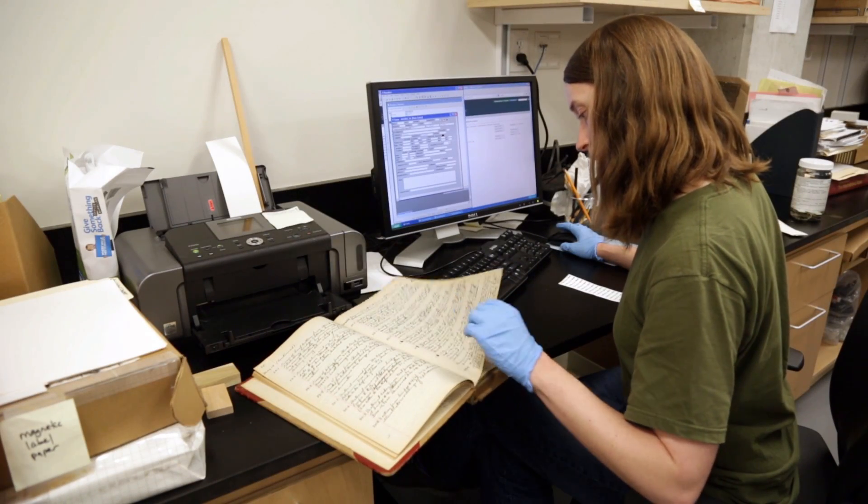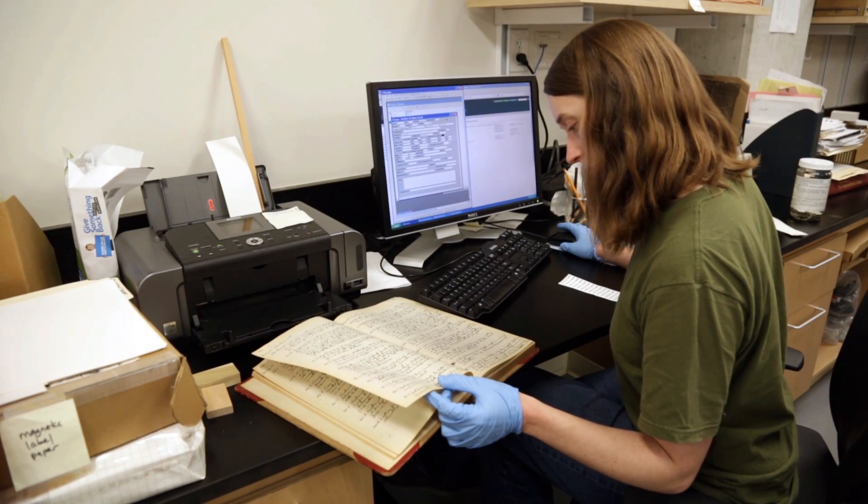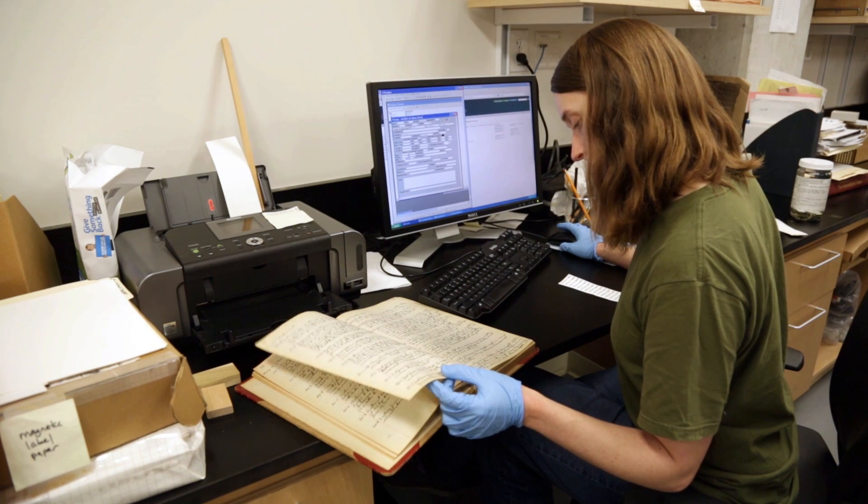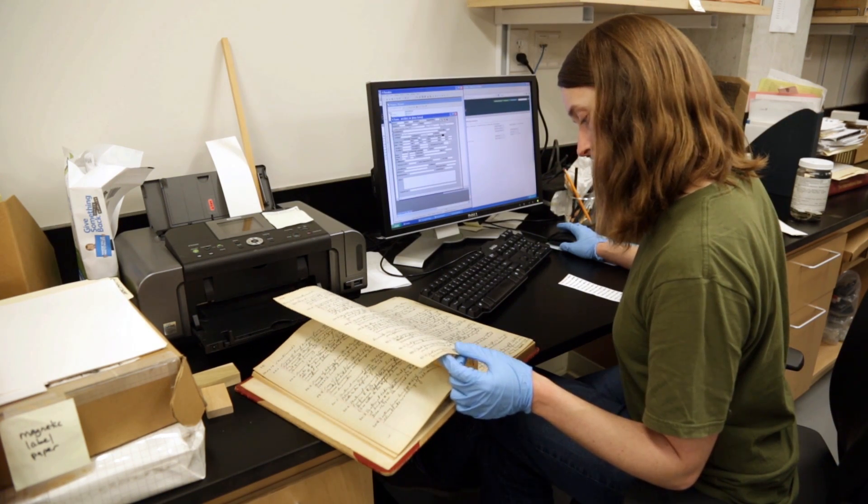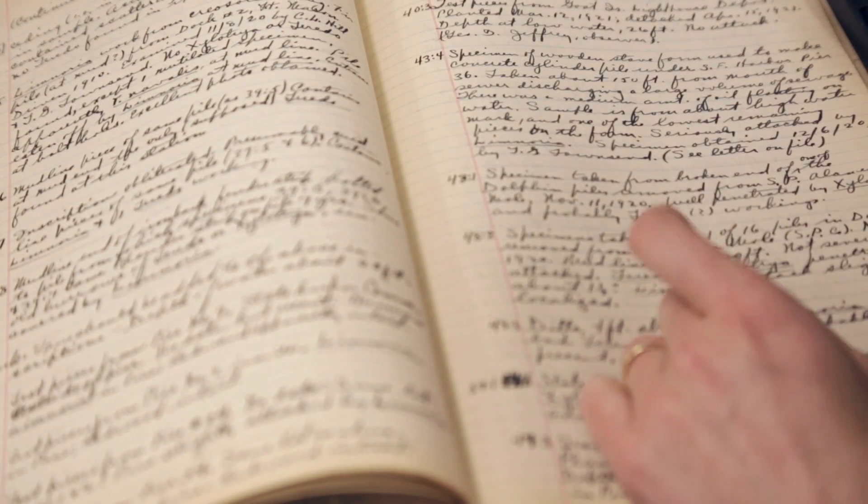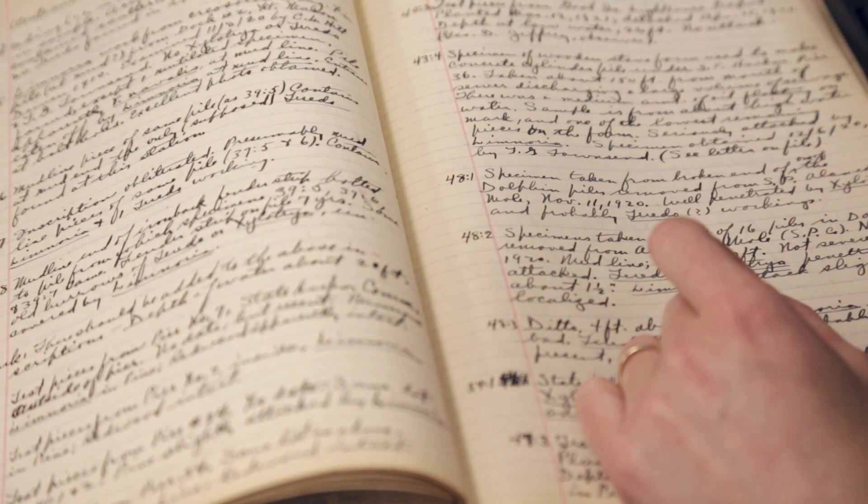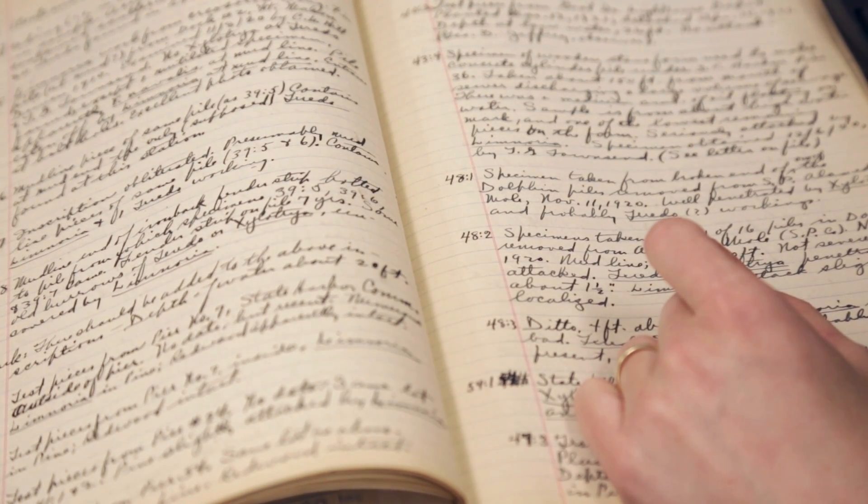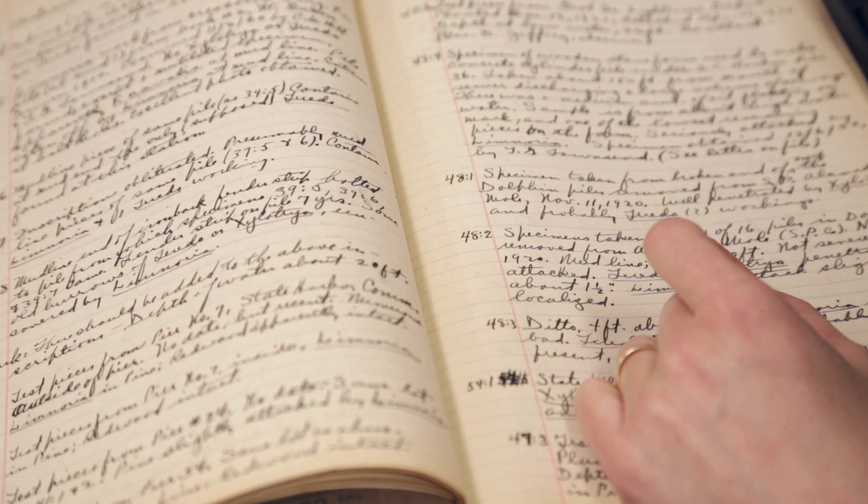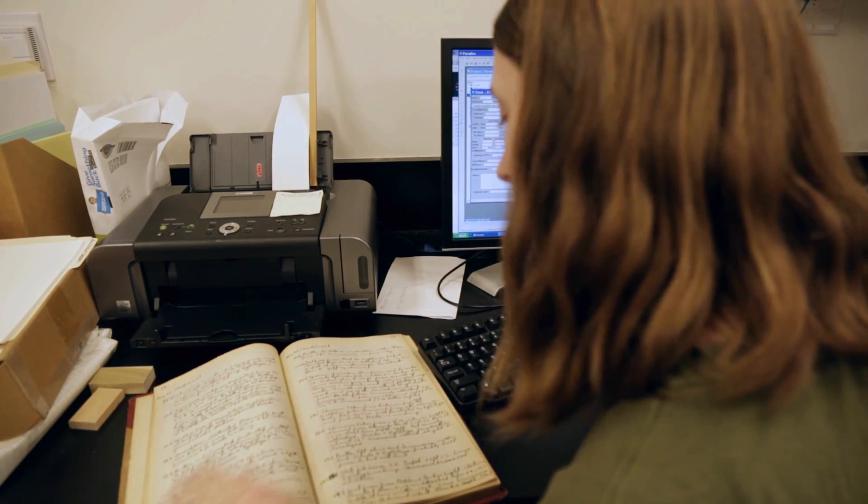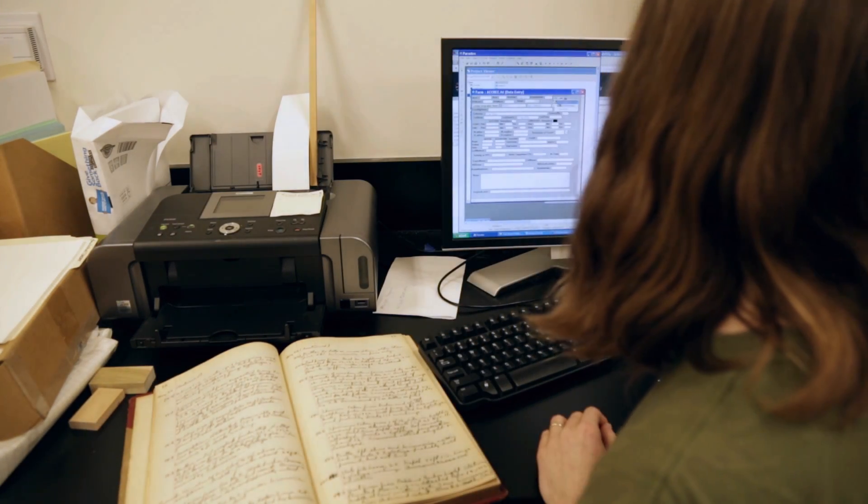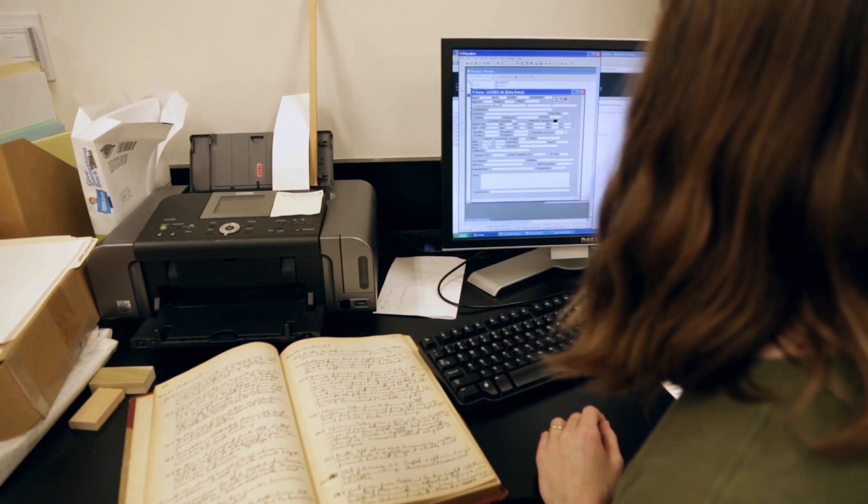We used to record catalog numbers in these creaky old log books. Ledgers, we called them. It's a fantastic ancient word for a fantastic ancient thing. Just write it down. Write a new number down and write what was associated with that number. These ledger entries were sometimes even typed, highfalutin technology in the 1940s and the 1950s.